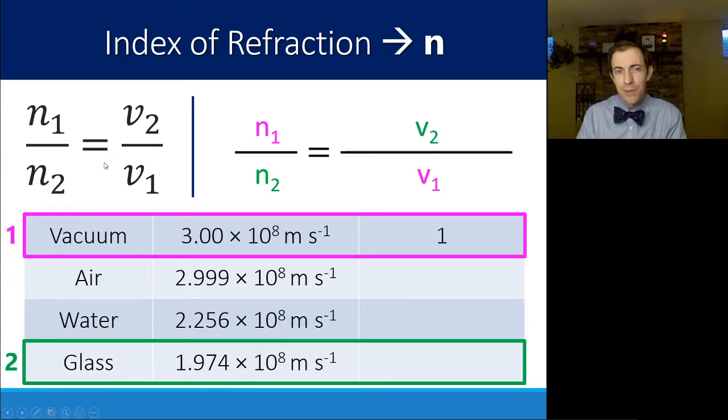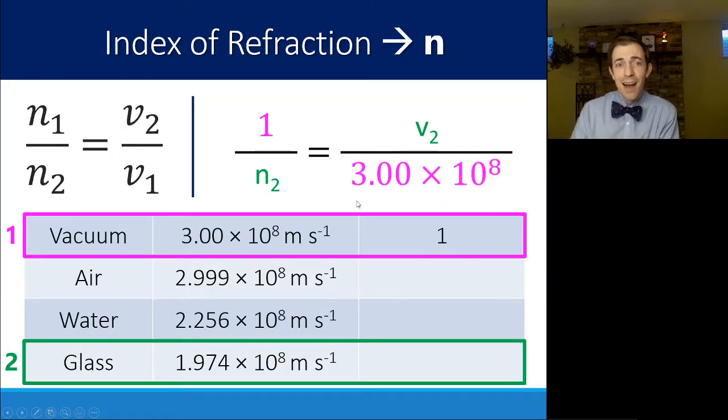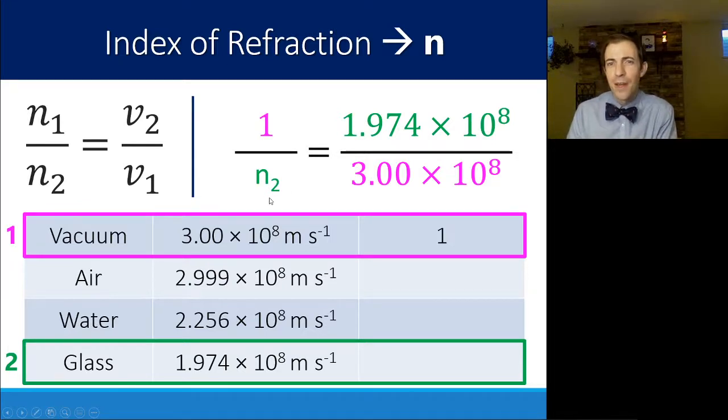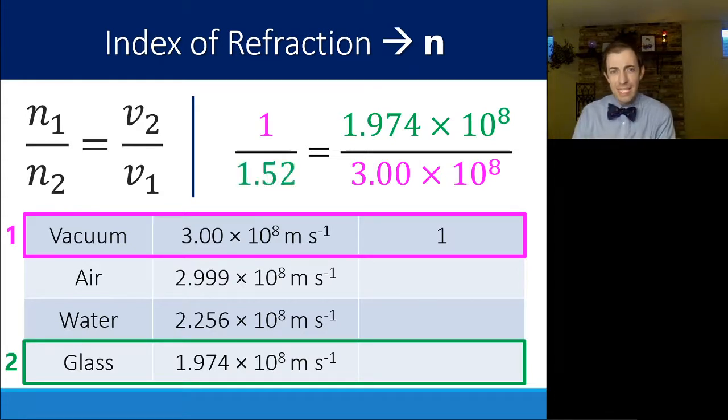I've assigned my medium 1 to vacuum. So n1 is going to be 1. That's our relative comparison point. v1 is going to be this 3.0 times 10 to the 8th. v2 is going to be the speed of light in glass here. And then all that's left for us to do is to solve for n2. Notice that the speed of light in glass is less than the speed of light in a vacuum. So this fraction here, this ratio, is less than 1, which means that n2 has to be larger than 1. 1, it turns out, is actually going to be our lowest index of refraction. We're not going to get an index of refraction smaller than 1. So in this case, if I solve that through, I find that the index of refraction for glass is about 1.52.